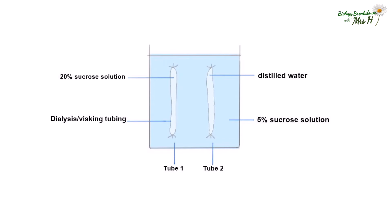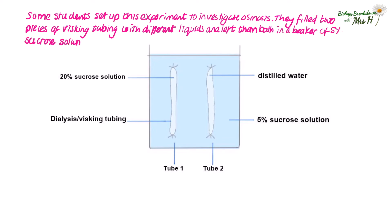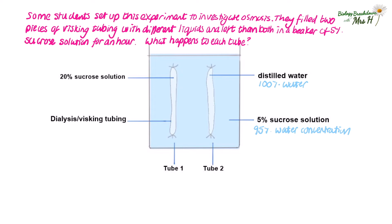We've got another question here. Some students set up this experiment to investigate osmosis. They filled two pieces of visking tubing with different liquids and left them both in a beaker of 5% sucrose solution for an hour. What happens to each tube? We know this is an osmosis question and we have to refer to the water concentrations. Distilled water is 100% water. 5% sucrose solution will have a 95% water concentration. 20% sucrose solution means there'll be an 80% water concentration. Which way will the water molecules move and what will happen to the tubes?